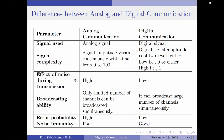The next parameter is the effect of noise during transmission. Analog communication suffers from noise during transmission, and therefore the effect of noise is high for analog communication, whereas for digital communication the effect of noise is quite low during transmission.